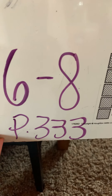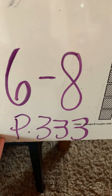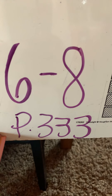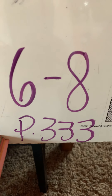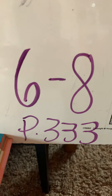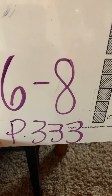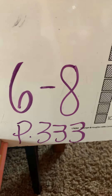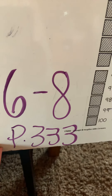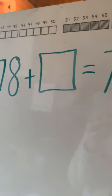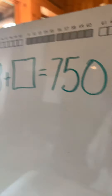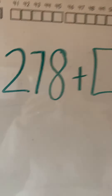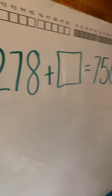For today's math assignment, we're going to be looking at page 333 and then 334, problems 6 through 8. We are going to be learning how to add up, so we're going to have a missing addend. I wrote the first equation on the board and we're going to read the story that goes with it.